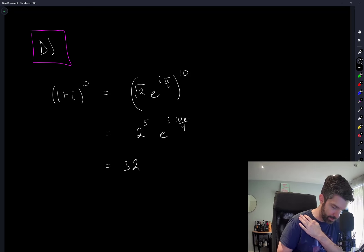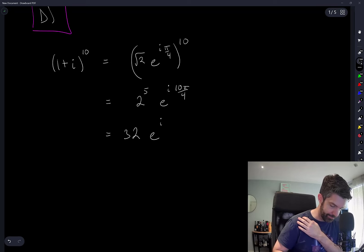So that's 32 e^(i...) what is this? Let's divide that by 2, 5π/2.